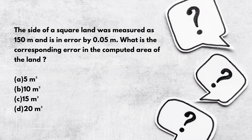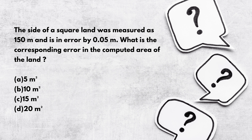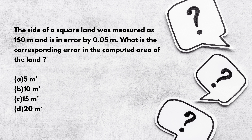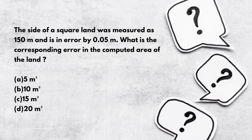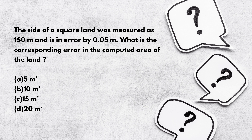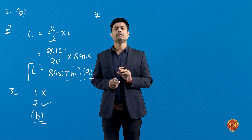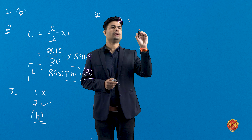The next question: the side of a square land was measured as 150 meters with an error of 0.05 meters. What is the corresponding error in the computed area of the land? We need to determine how much error appears in the computed area.